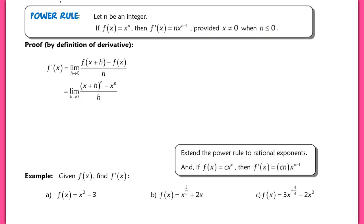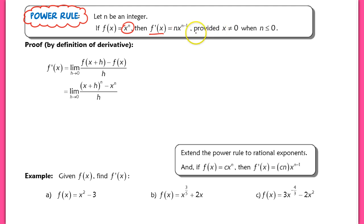Another rule that helps simplify finding a derivative is the power rule. If you have a function of the form x to the nth power, then to find the derivative, you take n, multiply it by x, and raise it to the n minus 1 power. Note: if n is less than or equal to 0, then x cannot equal 0.